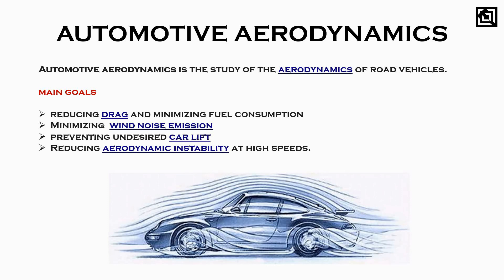The second goal is minimizing wind noise. At high speeds, wind noise is very high, so we reduce it through the shape of the car. The third goal is preventing undesired lift forces on the car. The fourth goal is reducing aerodynamic instability at high speeds. At high speeds, the car can feel unstable, so the design must fix aerodynamic instability to ensure safe driving.